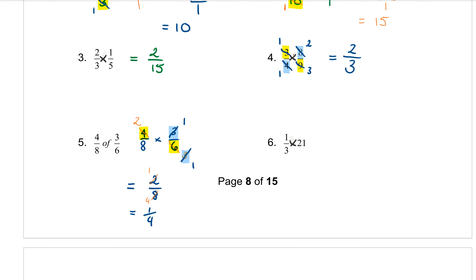Question 6: 1 third of 21. The word 'of' means times, so that's 1 third times 21 over 1 — putting the whole number over 1. Then we look for cancelling. The diagonal: 3 and 21, I can divide by 3. So 3 divided by 3 goes once, and 21 divided by 3 goes 7 times. Times what's left: on the top 1 times 7 is 7, on the bottom 1 times 1 is 1. We can just write that as the whole number 7.